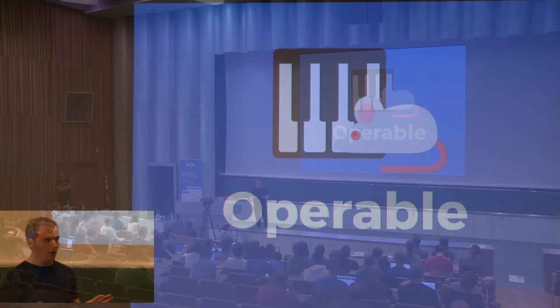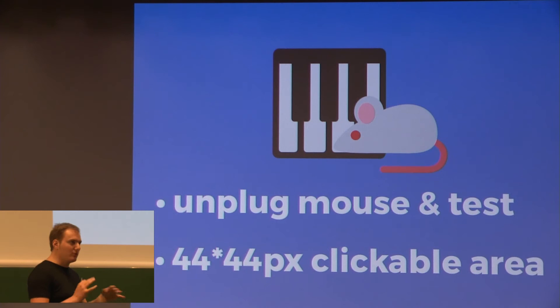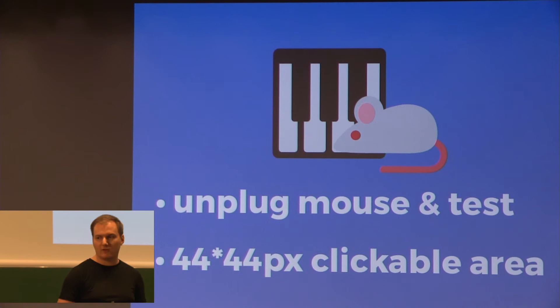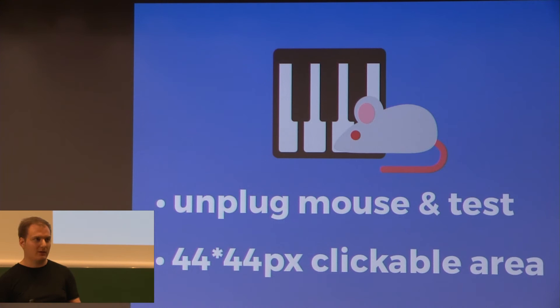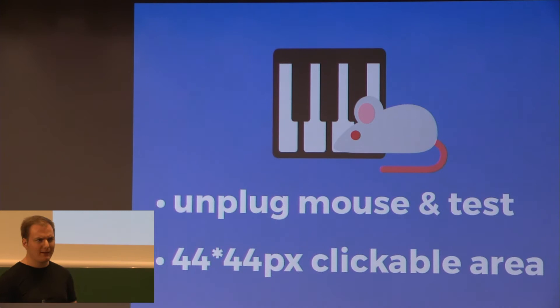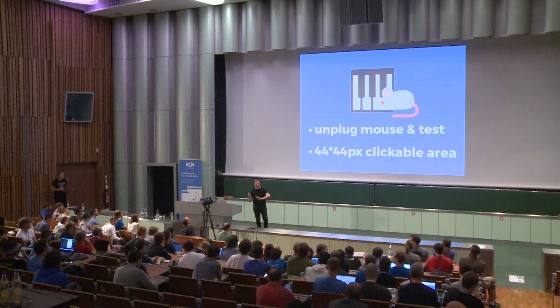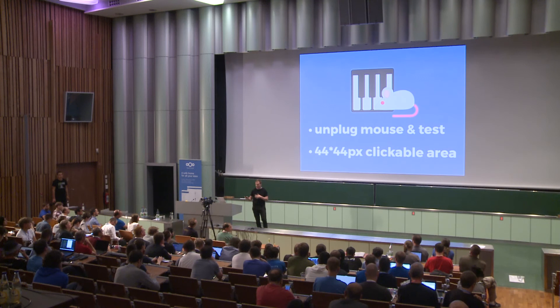Next is operability — it pertains to keyboard, mouse, and other input methods. The easiest thing to check: unplug your mouse, deactivate your touchpad, and just test with the keyboard. Use the tab key to switch between input elements and enter to activate them like a click. That makes a lot of problems clear. Also don't forget the mouse — we have a rule of 44 by 44 pixels minimum clickable area, which comes from mobile guidelines but applies to desktop too.